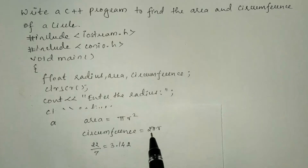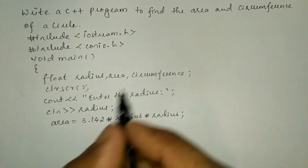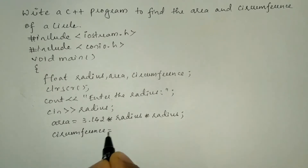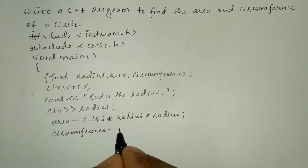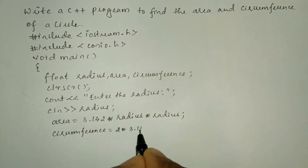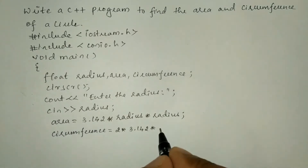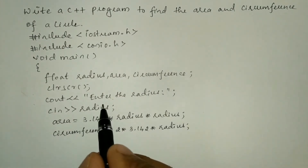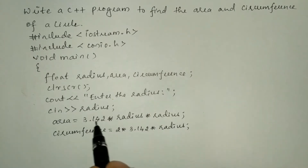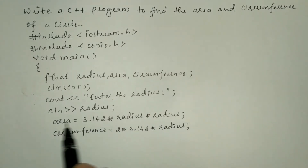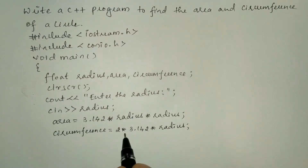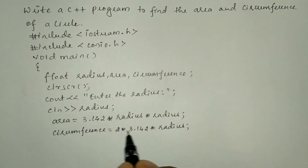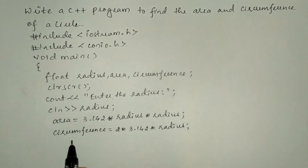Next I need to calculate the circumference of the circle whose formula is 2 pi r. I am going to write: circumference = 2 * 3.142 * radius. Whatever value for radius is entered by the user, it will be calculated using this formula and the value will be stored in circumference.